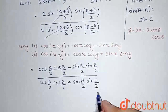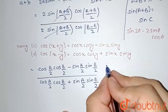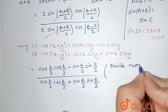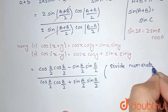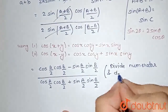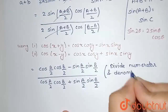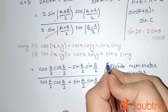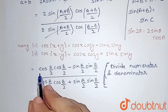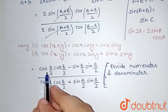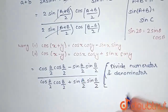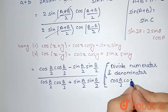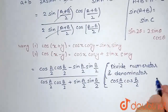Now I divide the numerator and denominator by cos(A/2)·cos(B/2). In the question we had terms of tan, so dividing by cos makes those terms become 1, and sin/cos becomes tan — giving tan(A/2)·tan(B/2).